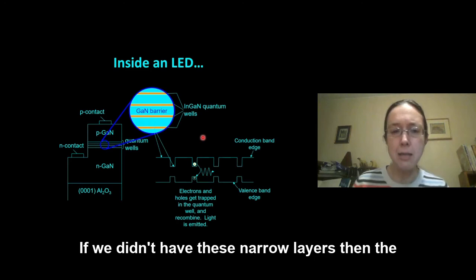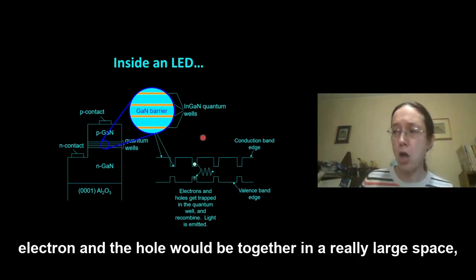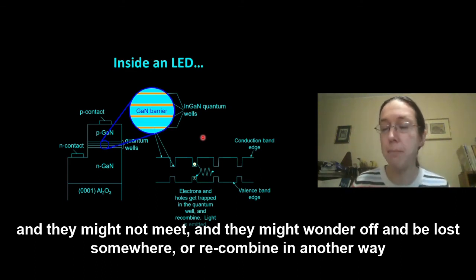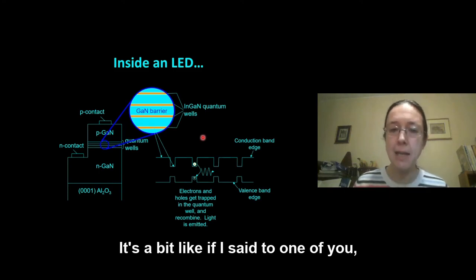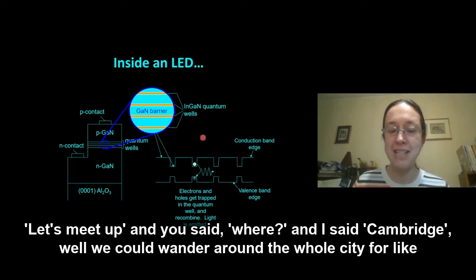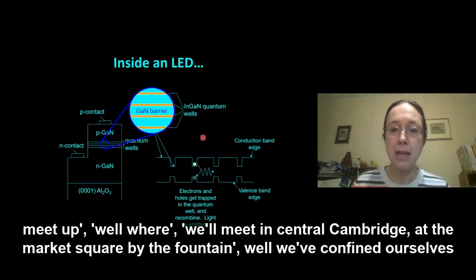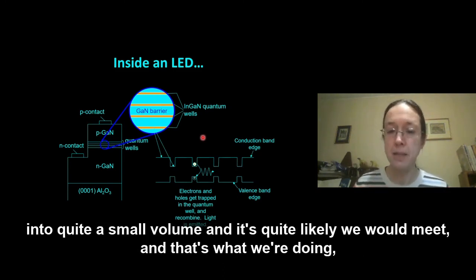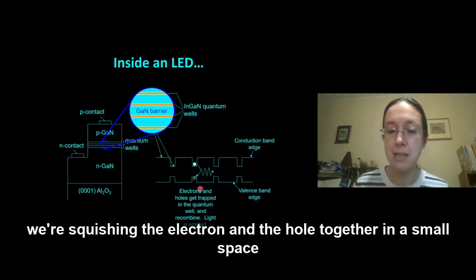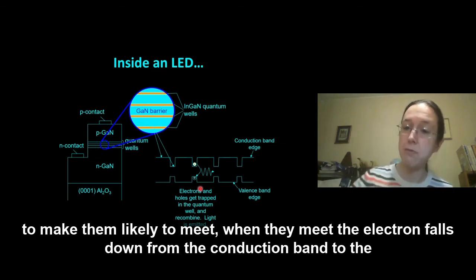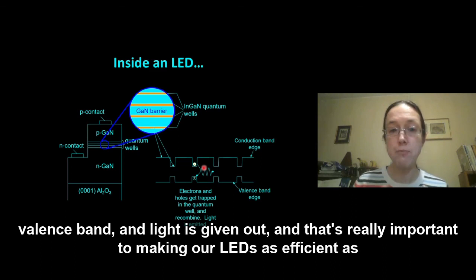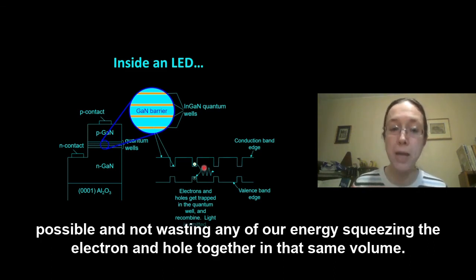If we didn't have these narrow layers, then the electron and the hole would be together in a really large space and they might not meet and they might wander off and be lost somewhere or recombine in another way, which didn't give out light. It's a bit like if I said to one of you, let's meet up and you said where? And I said Cambridge. Well, we could wander around the whole city for the whole day and never find each other. But if I said let's meet up in central Cambridge at the market square by the fountain, well, we've confined ourselves into quite a small volume and it's quite likely we would meet. And that's what we're doing. We're squishing the electron and hole together in a small space to make them likely to meet. When they meet, the electron falls down from the conduction band to the valence band and light is given out. And that's really important to making our LEDs as efficient as possible and not wasting any of our energy, squeezing the electron and hole together in that same volume.